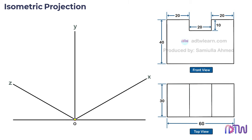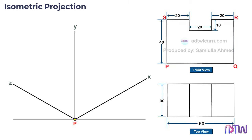We will name the edges of this front view for convenience as P, Q, R, and S. We will draw the front view of the object facing on the XY plane. The left edge point of the figure is at the intersection point, so label this intersection point as P. On this XY plane we will draw the front view of the object. The height of this object in the front view is 40 millimeters, so take a ruler and mark a point on the y-axis at 40 millimeters from point P.